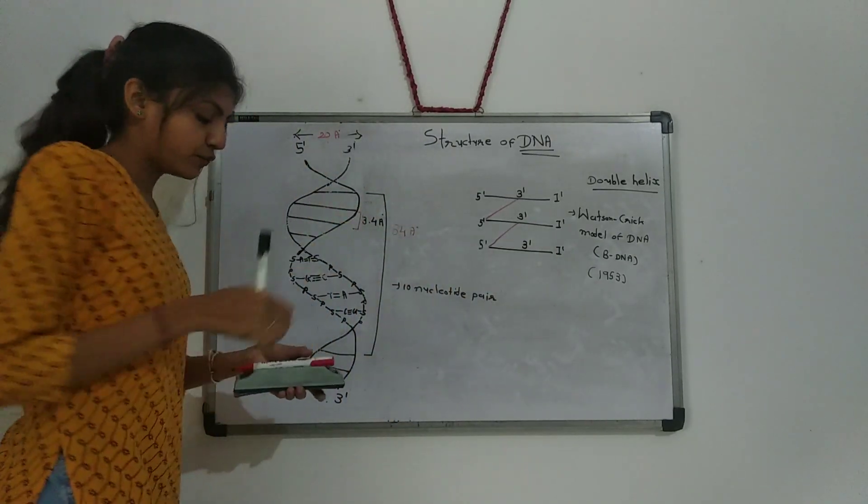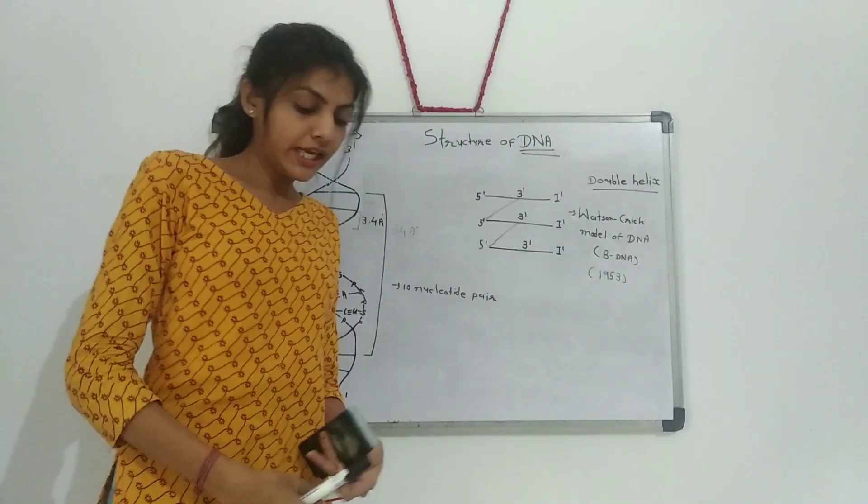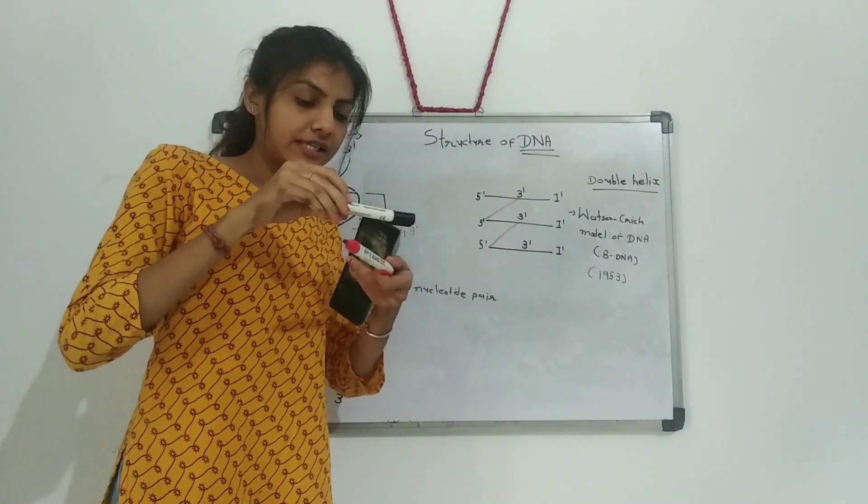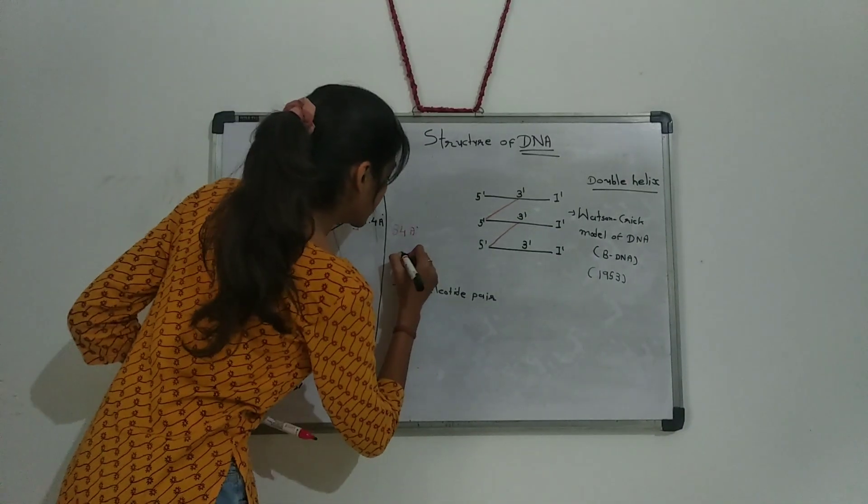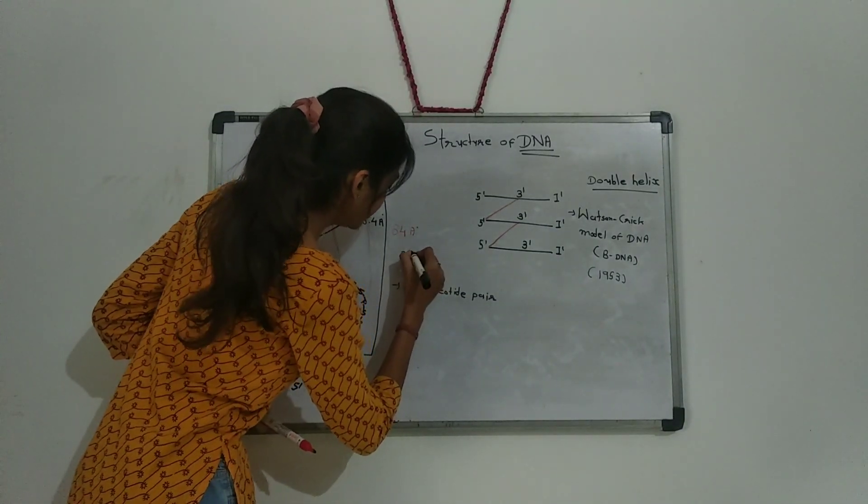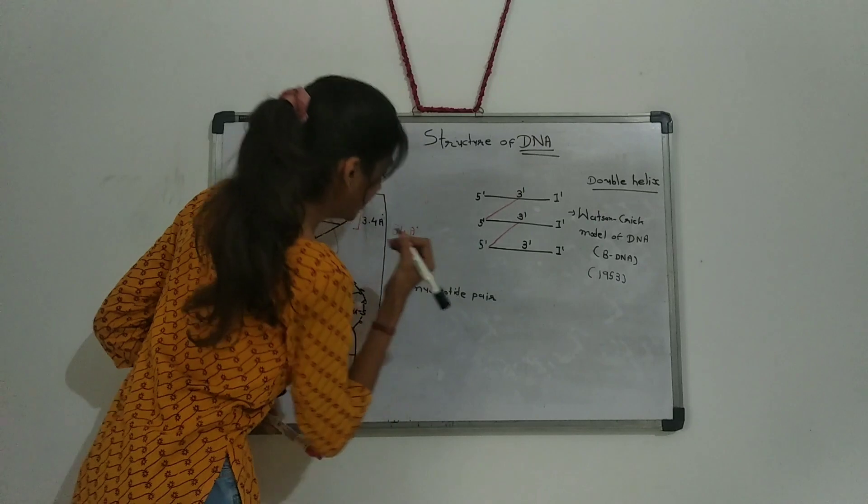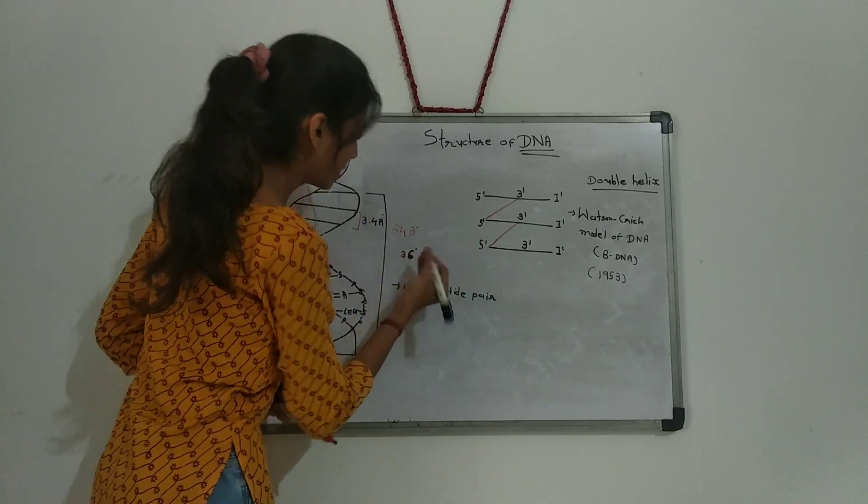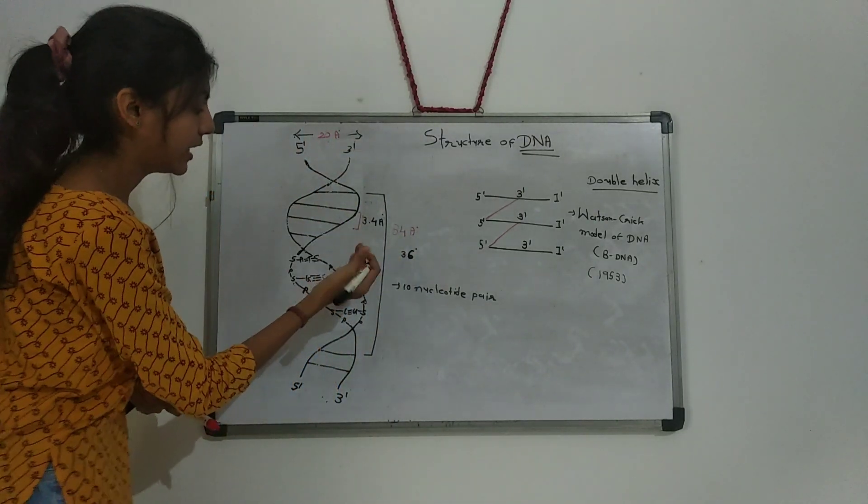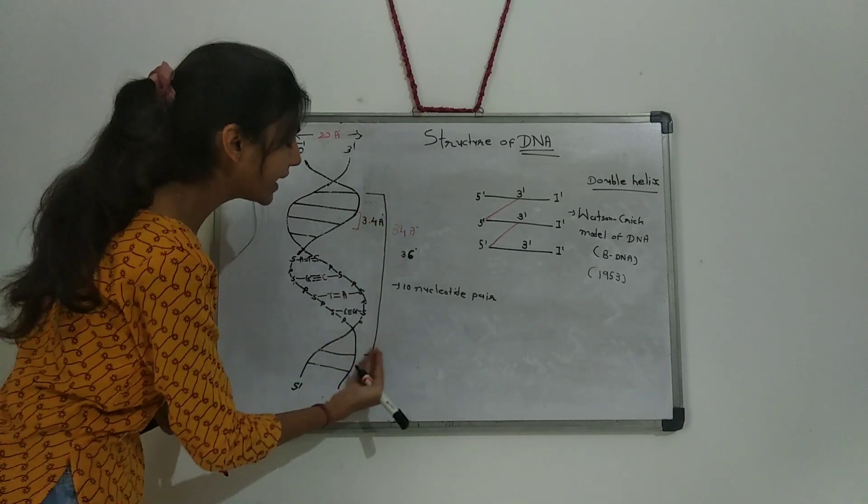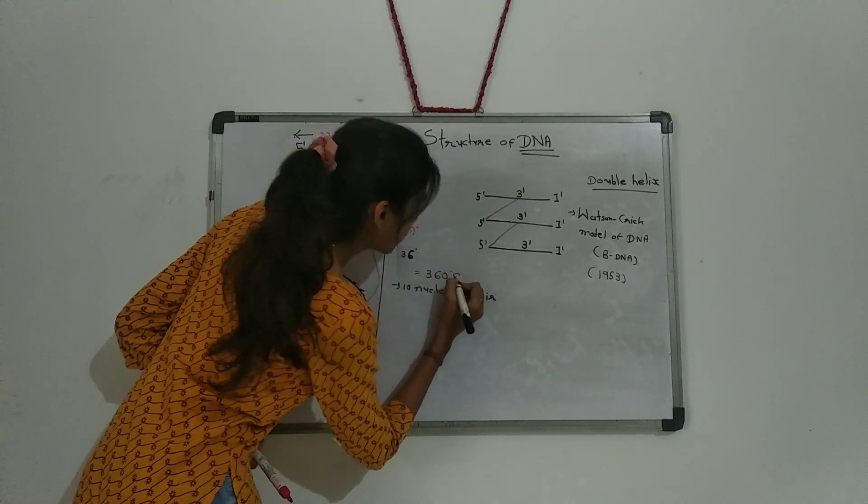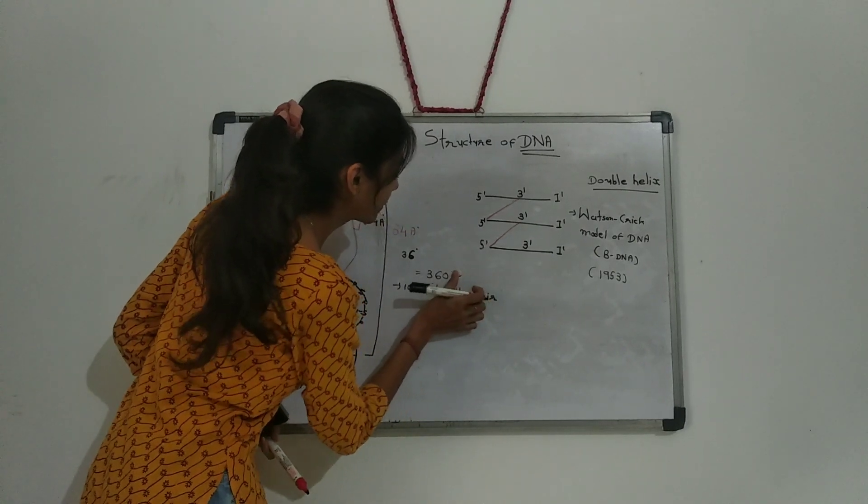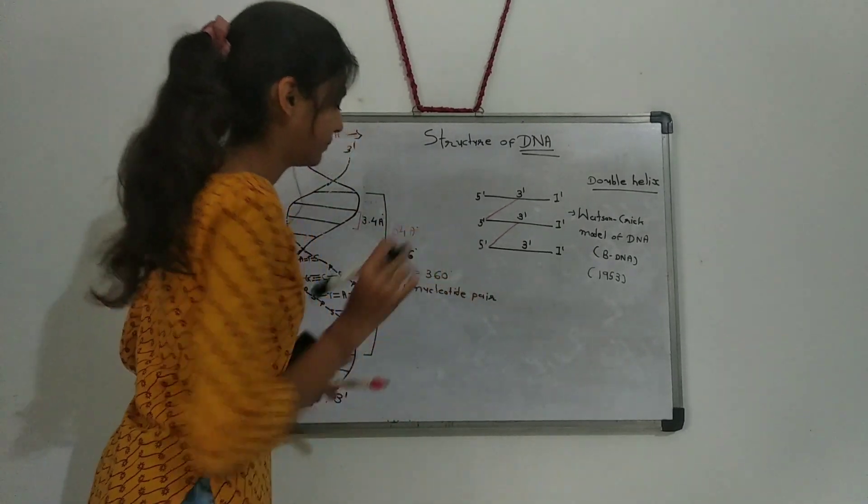One complete turn in the helix is 360 degrees.